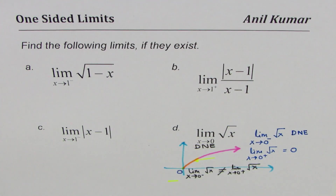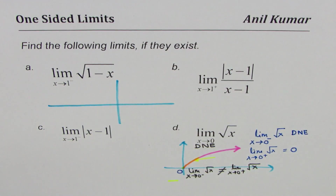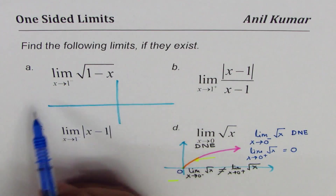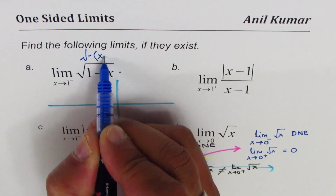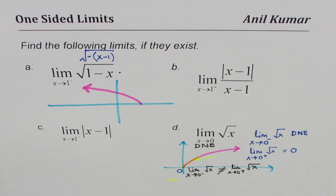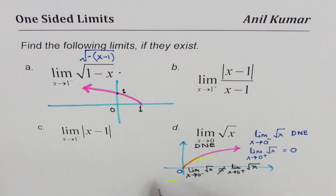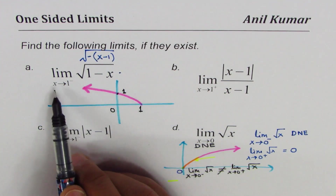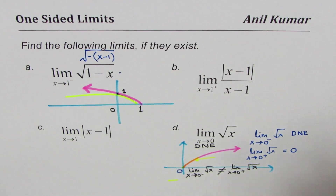Now let's take this transformed function, square root of (1 minus x). Taking negative common gives square root of minus (x minus 1). The graph of this function is a reflected/shifted version — if x is 0, the value is 1. The question is: what is the limit as x approaches 1 from the left side? If you approach from the left side, you land at 0. Therefore the limit is equal to 0.